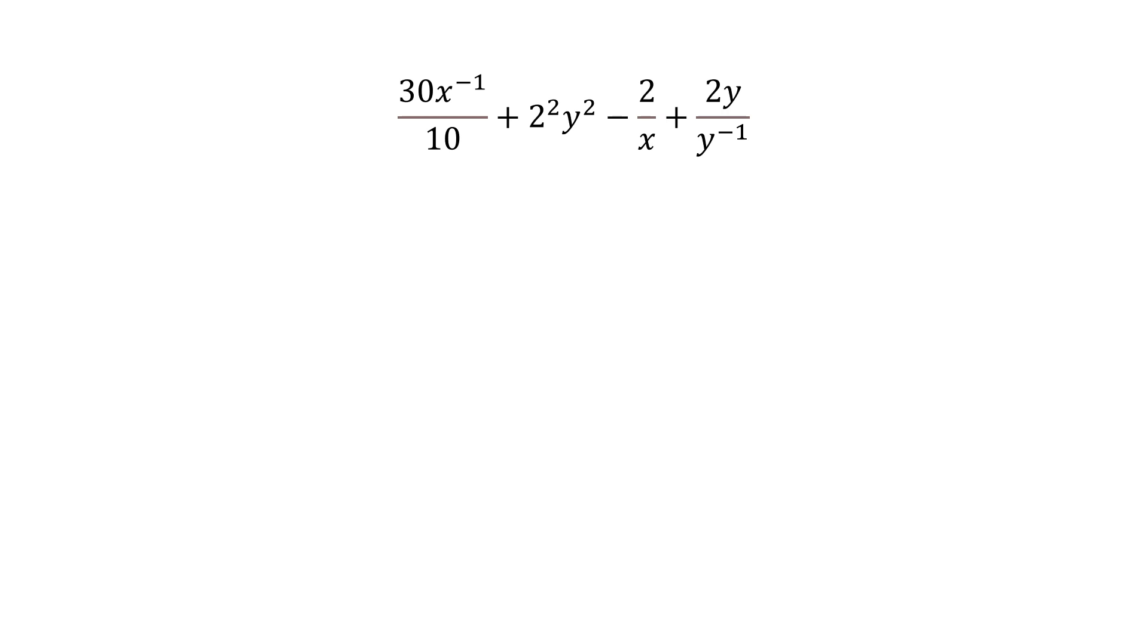First thing you need to understand, whole numbers, just simplify them. 30 over 10 is 3. There are a couple of steps here. Your first step, we're going to make this a flat problem. What I mean by that is we are going to move everything up.